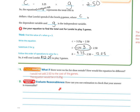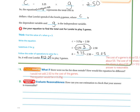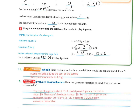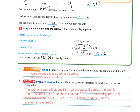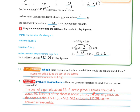Number two, let's evaluate the reasonableness. How can you use estimation to check your answer is reasonable? You know the cost of the game is about $3, and if Lorelai plays three games, the cost is about $9, because three times three is nine.